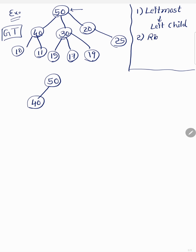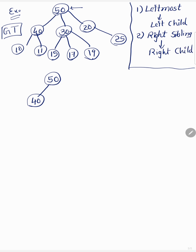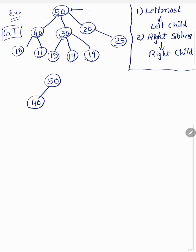The second rule: the right sibling — siblings are children sharing the same parent — the right sibling will become the right child in the binary tree. It's as simple as that. Node 50 is the root and has no sibling, so it has no right child.